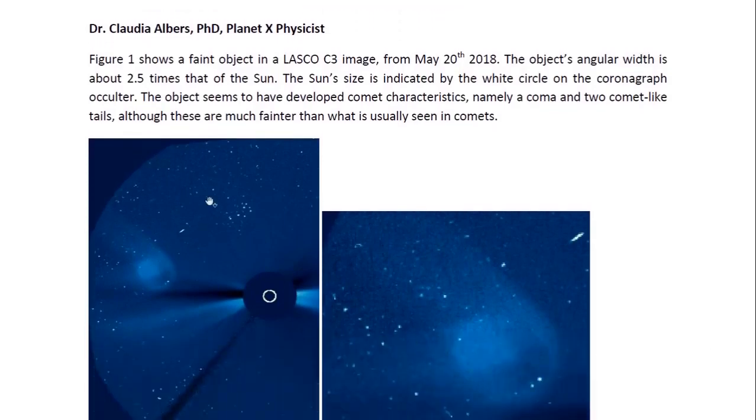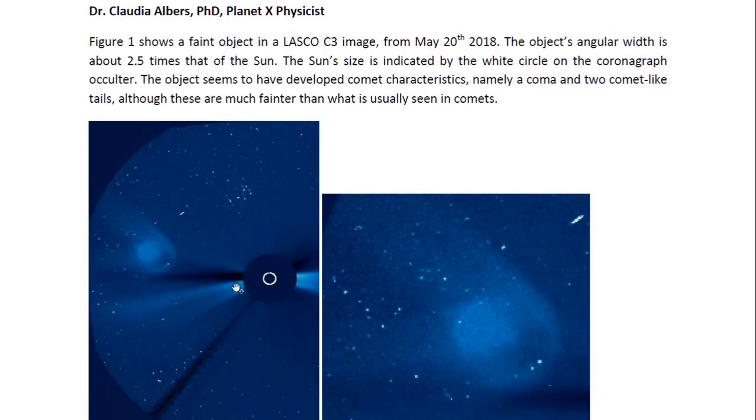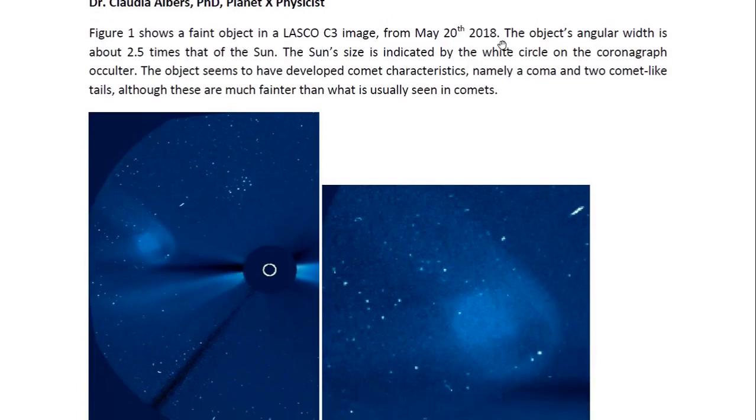In this figure we see a faint object in a LASCO C3 image from May 20th, 2018. As you can see, the object's angular width is about 2.5 times that of the Sun. The Sun size is indicated by the white circle on the coronagraph occulter. So it's about 2.5 times larger than the Sun.